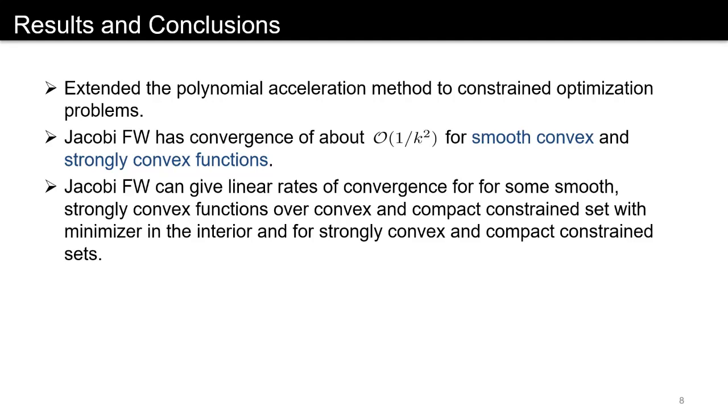The Jacobi Frank-Wolfe can give linear rates of convergence for some smooth strongly convex functions over a convex compact constraint set with the condition that the minimizer is in the interior. We can also get linear rates for smooth or strongly convex functions over strongly convex and compact constraint sets. Thank you.